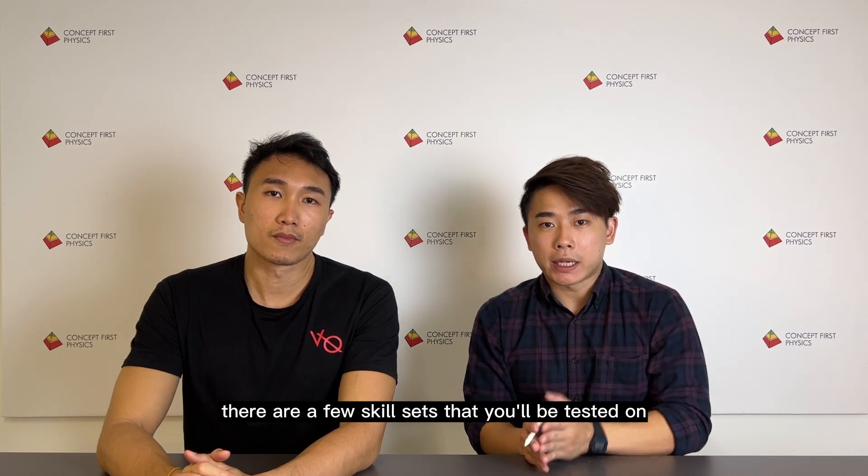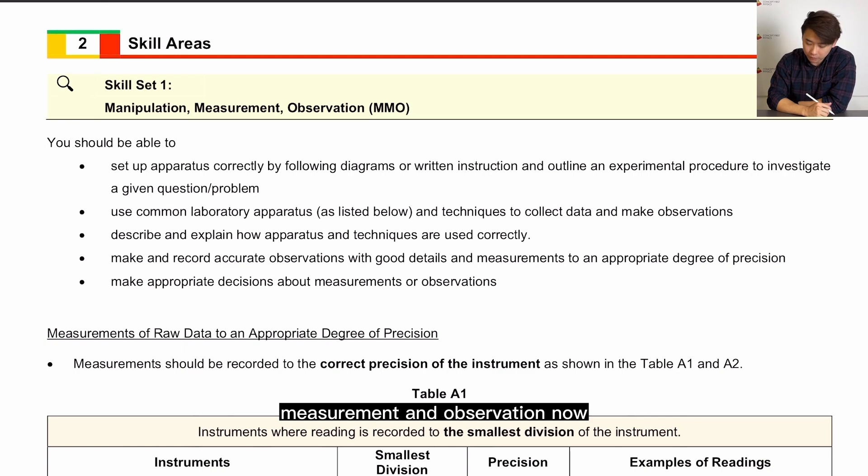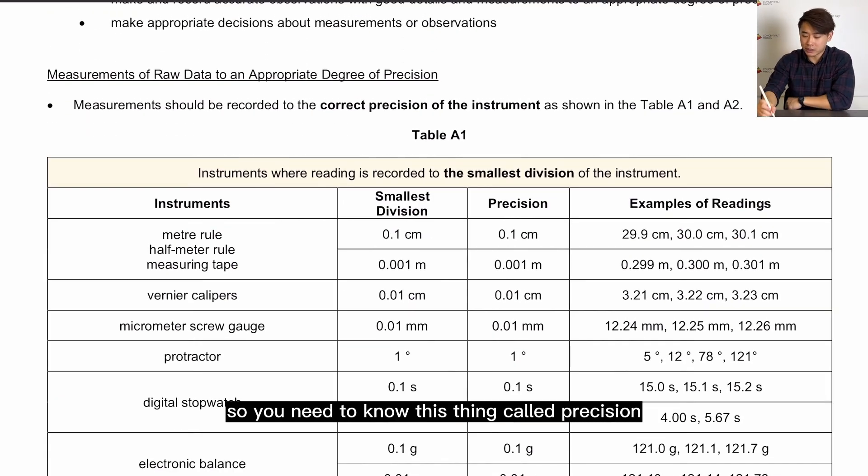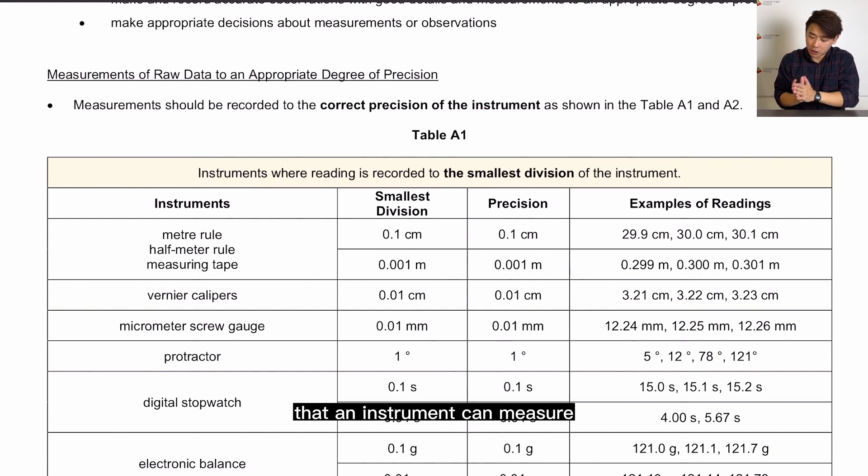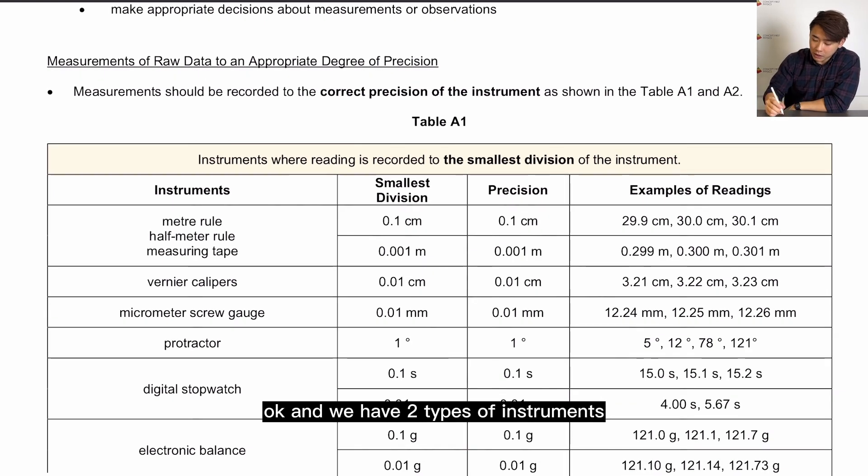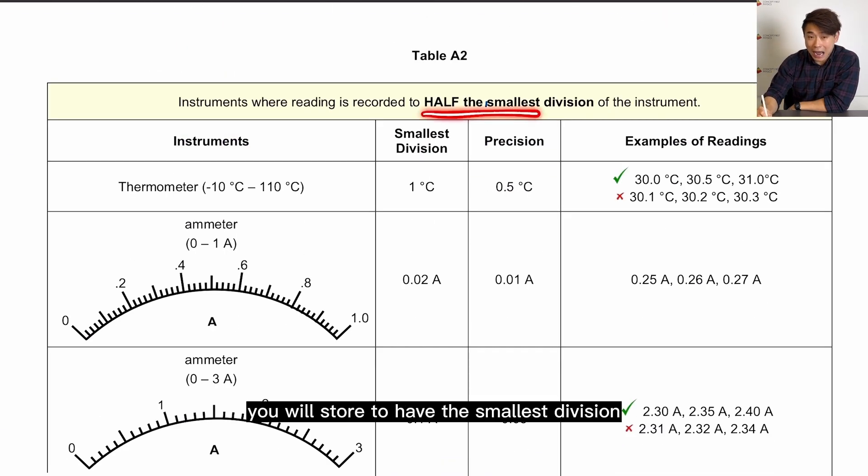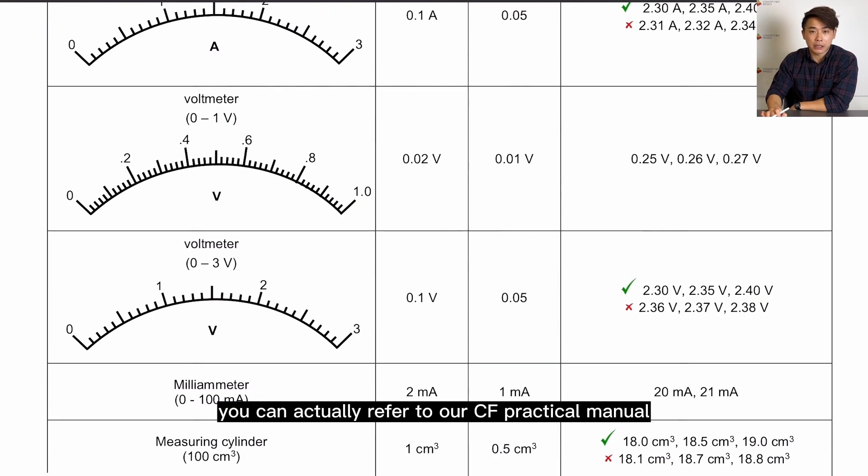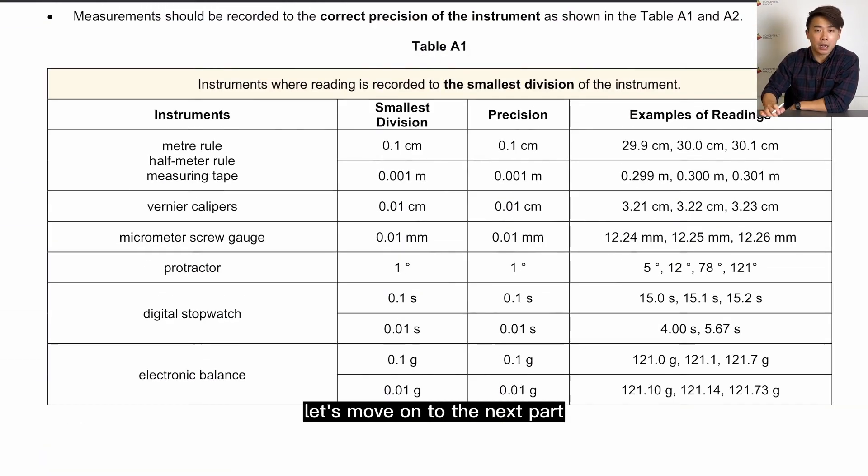Okay, in practical there are a few skill sets that you'll be tested on. The first one is on manipulation, measurement, and observation. Now many students don't really know how to store their data, so you need to know this thing called precision. So precision is basically the smallest unit that an instrument can measure. Okay, and we have two types of instruments. The first one you will store the measurement to the smallest division, whereas for the second one you will store it to half the smallest division. For our CF students, you can actually refer to our CF practical manual. All of this have been compiled nicely for you. Let's move on to the next part.